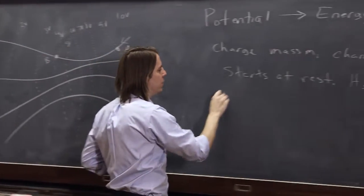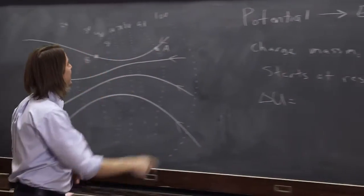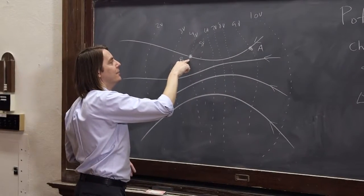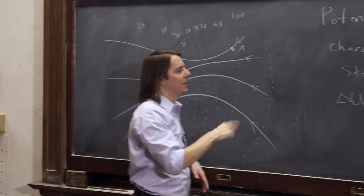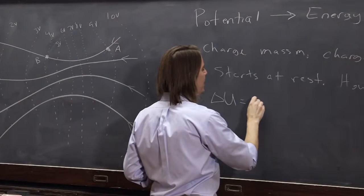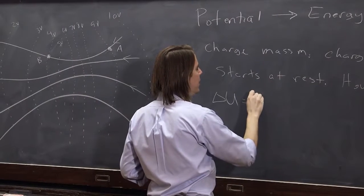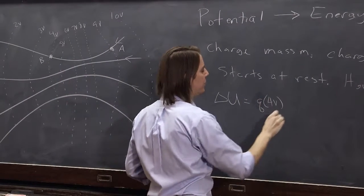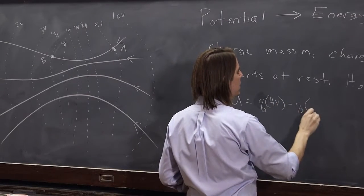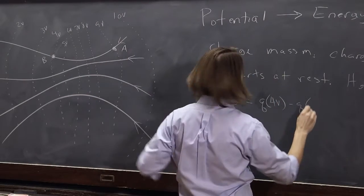So delta U is going to be the potential it ended at, 4 volts, minus where it began. But you've got to multiply it by q. So it's going to be q times 4 volts minus q times started at 9 volts.